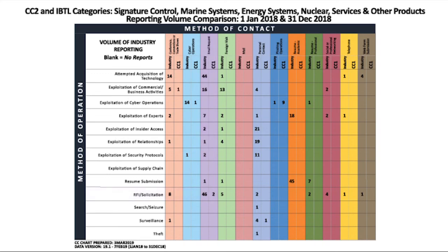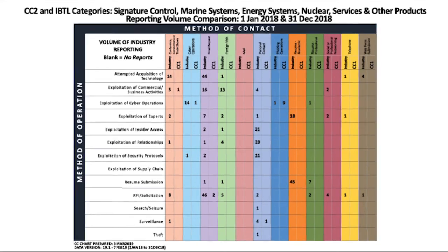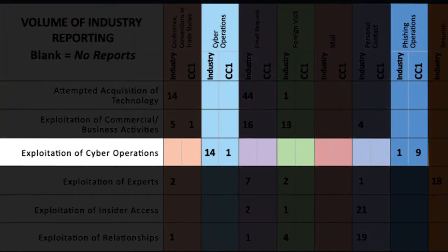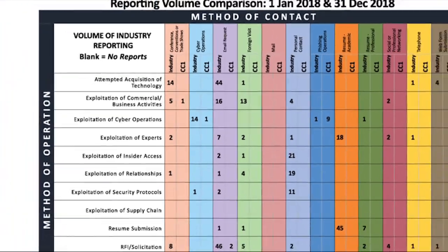It is also important to note that many SCRs DSS receives from cleared industry do not have an IBTL category being targeted readily apparent. For example, in exploitation of cyber operations via phishing, there is only one SCR from industry concerning those five specific IBTL categories — yet the company had reported nine phishing SCRs in the past year. This is normal and highlights an informational gap.